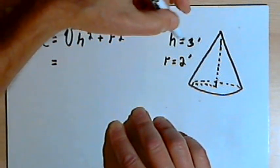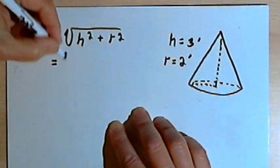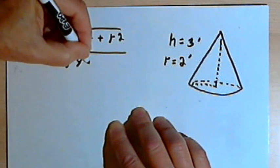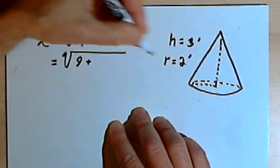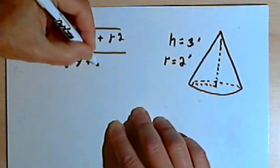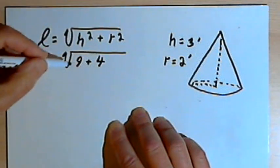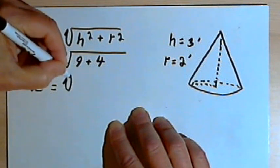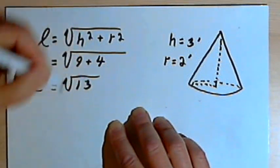I'll plug the numbers in. The height is 3, so I'm going to have the square root of 3 squared, which is 9, plus 2 squared, which is 4, so I've got the square root of 9 plus 4. So L equals the square root of 13.